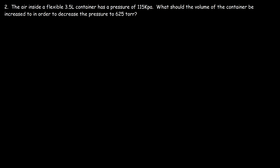Now let's move on to number 2. The air inside a flexible 3.5 liter container has a pressure of 115 kPa. What should the volume of the container be increased to in order to decrease the pressure to 625 torr? So once again, let's just write out what we have.